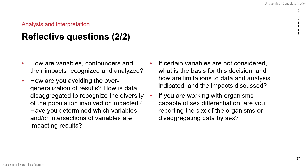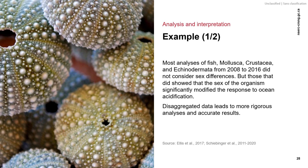If certain variables are not considered, what is the basis for this decision and how are limitations to data and analysis indicated and the impacts discussed? If you are working with organisms capable of sex differentiation, are you reporting the sex of the organisms or disaggregating data by sex? Imagine you are a marine biologist studying the effects of ocean acidification on certain animals. Do you think it would be important to note the sex differences of organisms? One literature review found that most analyses of fish, mollusca, crustacea, and echinodermata from 2008 to 2016 did not consider sex differences. But those that did showed that the sex of the organisms significantly modified their response to ocean acidification.